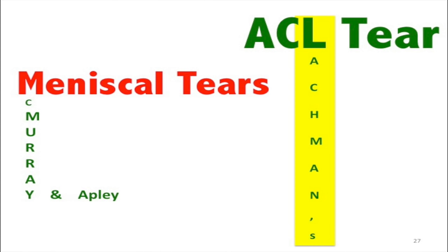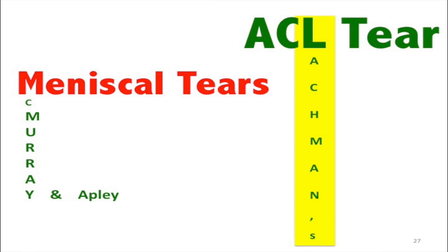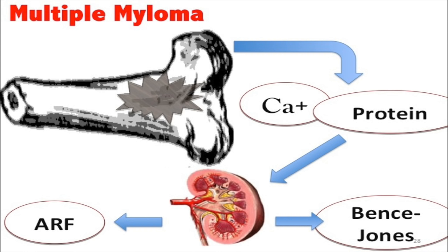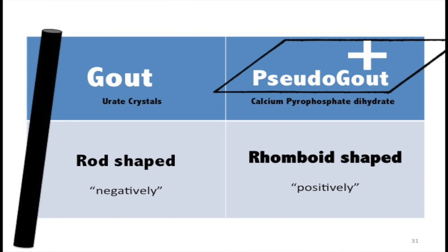For meniscal tears, the tests are McMurray and Apley. ACL tears use the Lachman's test. Multiple myeloma: bone pain leads to high calcium levels and high protein levels in the blood; that protein goes to the kidney causing acute renal failure and Bence Jones proteins in the urine. For gout vs. pseudogout: gout has rod-shaped crystals that are negatively birefringent; pseudogout is positively birefringent and rhomboid-shaped.